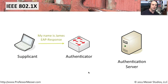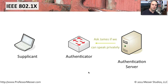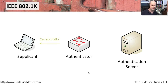The supplicant recognizes that it's being asked and responds, essentially saying: yes, my name's James, I'm here on the network, and I'd like to start the process of gaining access. The authenticator then lets the authentication server know that James is on the network and asks what to do. The authentication server waits for more information, so the authenticator asks James if he can communicate and provide credentials. James responds and provides his credentials.